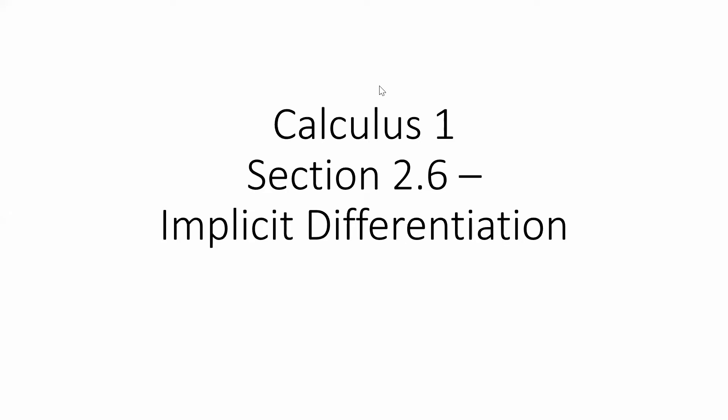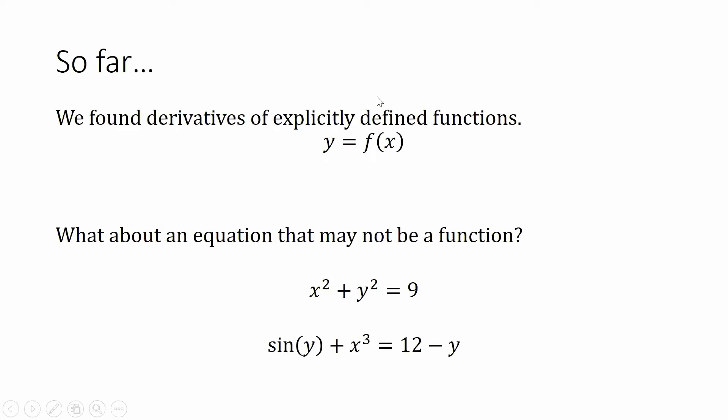In this section, we're going to take a look at a concept known as implicit differentiation. So far, we've found derivatives explicitly. When I mean explicitly, I mean that our outputs were a function of our inputs. So every time we had done a derivative so far, we could have equivalently wrote y equals or f equals.